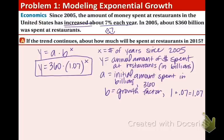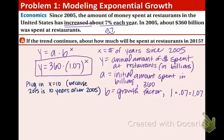Well, in the year 2015, that is exactly 10 years after 2005. So that means our x value is going to be 10, and that's the number we are going to substitute in. When you plug this into your calculator, you get approximately 708. So that means about 708 billion dollars will be spent at restaurants in the US in 2015, if this trend continues.